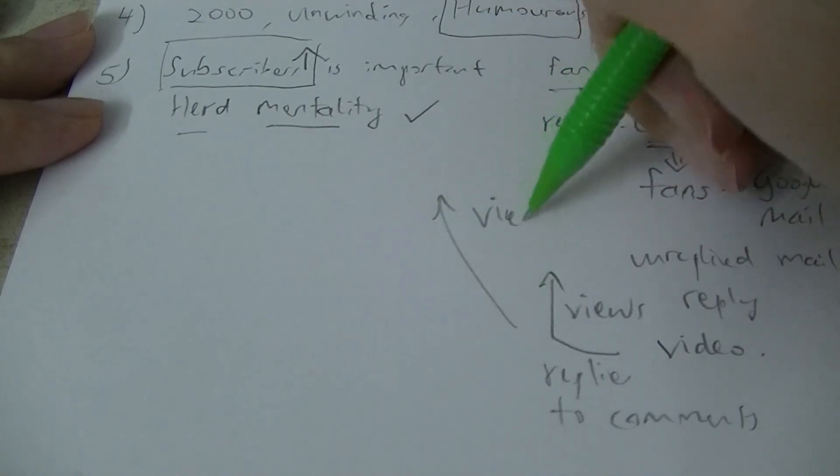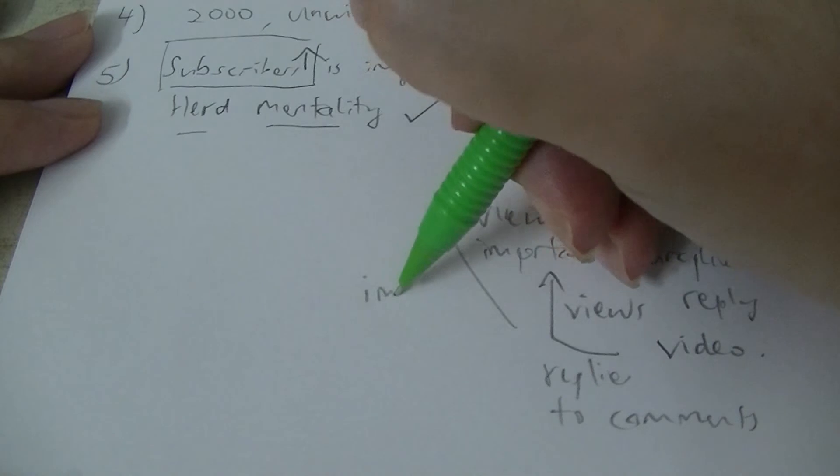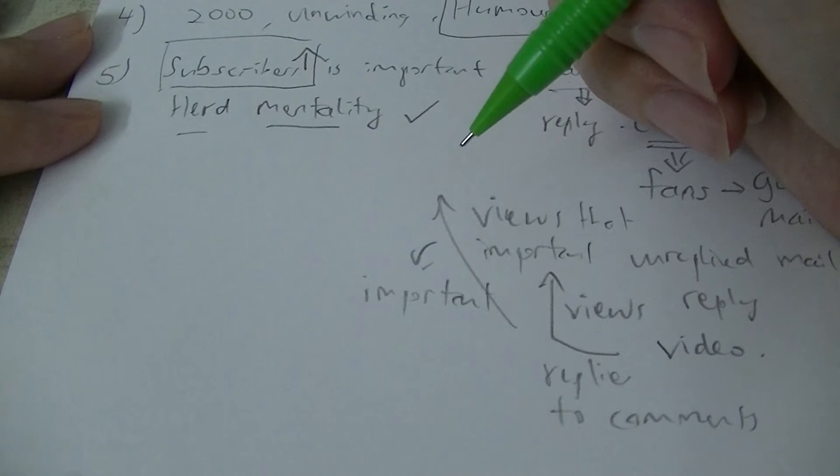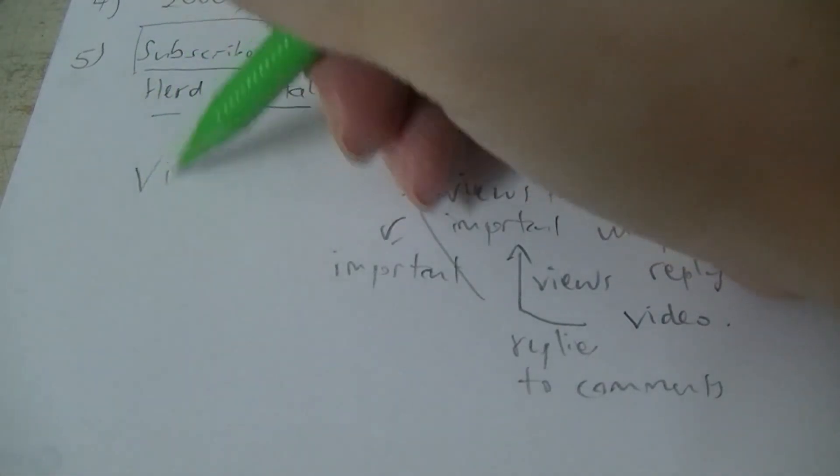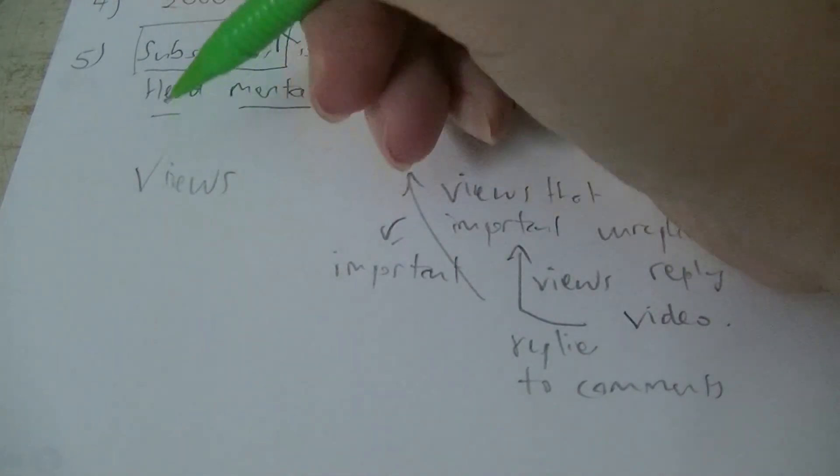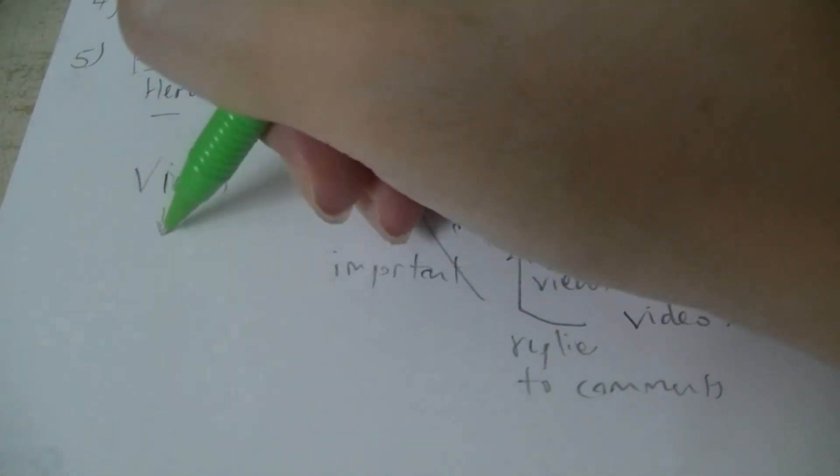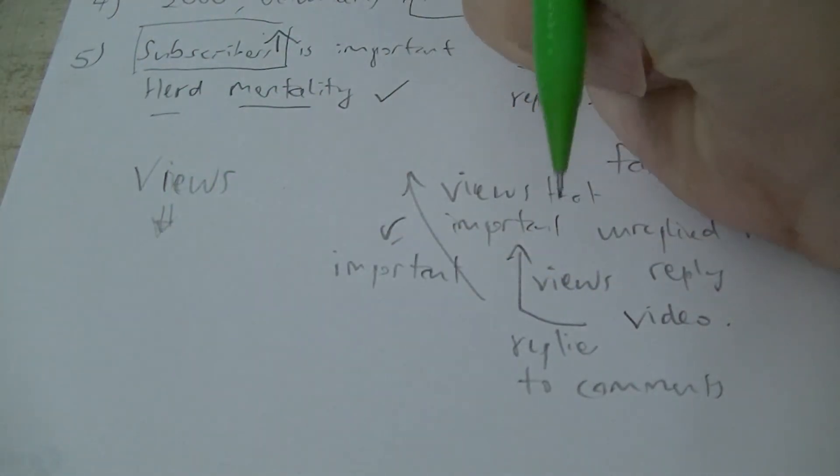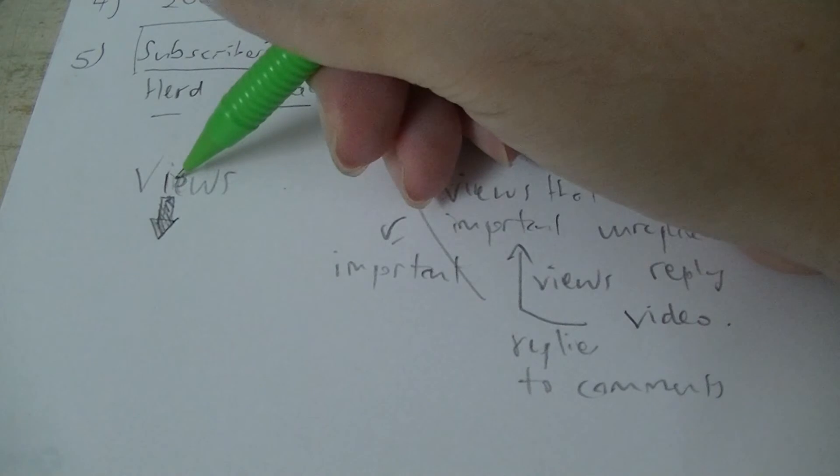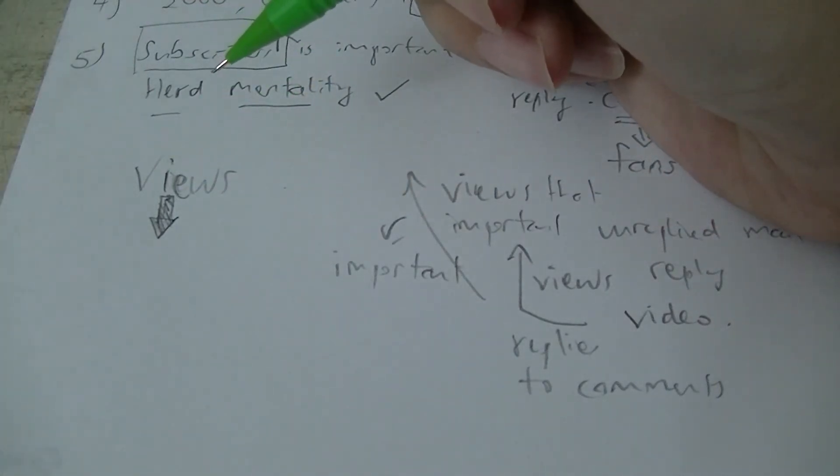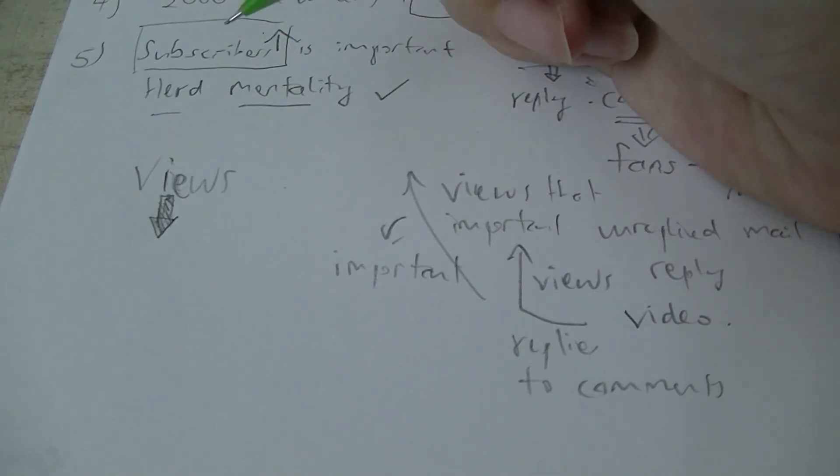Even though I said earlier views are not that important, they do have a bit of importance. In the past, YouTube had an algorithm that emphasized on views. Views were important - the more views a video has, the more the video would be thrust into other people's faces. For example, look at PewDiePie - he has a tremendous amount of views, so he gets more attention from YouTube.